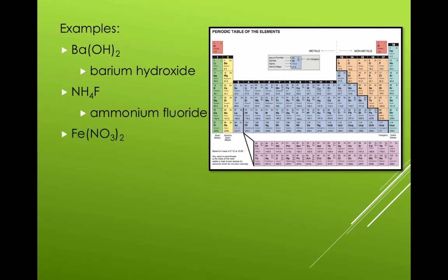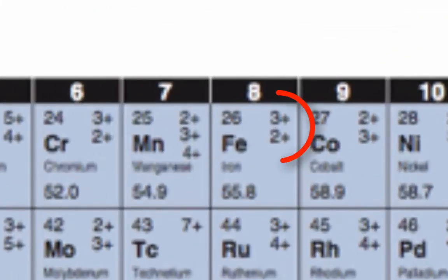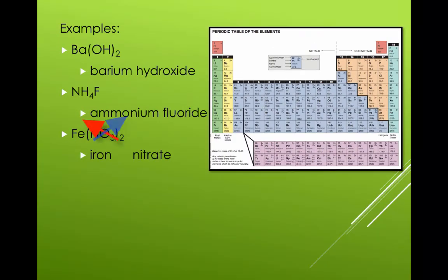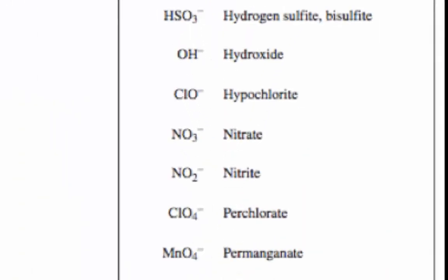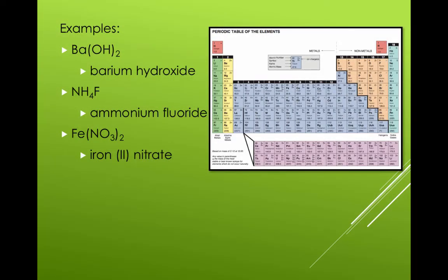Fe bracket NO3 bracket 2. This is iron nitrate. However, iron is multivalent. It has more than one iron charge. We will reverse the crisscross and iron becomes plus 2 and nitrate becomes negative 1. Looking at our table, nitrate does indeed have a negative 1 charge, so iron does have the plus 2 charge. That makes this iron 2 nitrate.